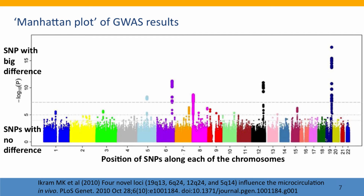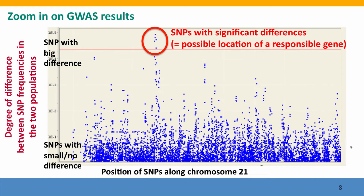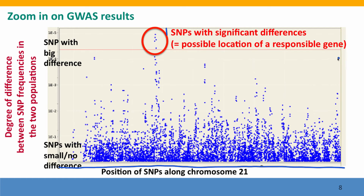Now we can zoom in on this. It's hard to appreciate, looking at the whole genome, how many different SNP positions we're looking at. So we can zoom in on a single chromosome — chromosome 21, which is one of the smallest chromosomes. When we just look along chromosome 21, every dot is a SNP position, and you can see how many SNPs there are even on this small chromosome. Circled in red are some SNPs where the statistical analysis says the differences are likely to be significant, suggesting they may be locations of a gene responsible for part of the difference in height.